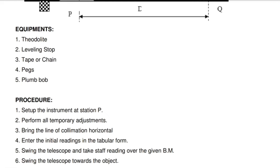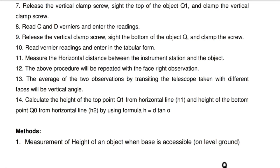5. Swing the telescope and take staff reading over the given BM, that is benchmark. 6. Swing the telescope towards the object. 7. Release the vertical clamp screw.